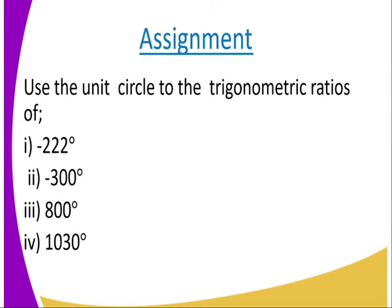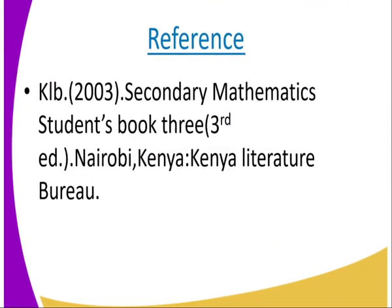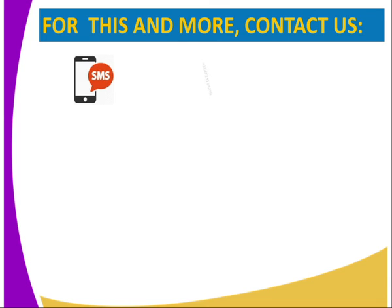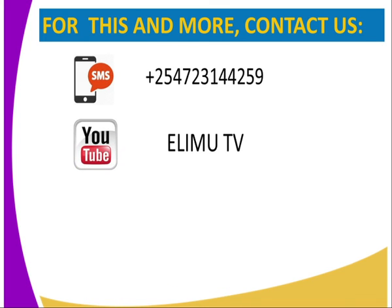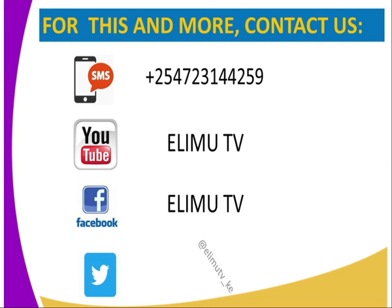Assignment: use the unit circle to find the trigonometric ratios of negative 222 degrees, negative 300 degrees, 800 degrees, and 1030 degrees. For more information, you can visit the KFB 2003 secondary mathematics student book 3, third edition. You can also contact us via SMS, YouTube, Facebook, or Twitter. Stay tuned to your lesson video. Thank you.